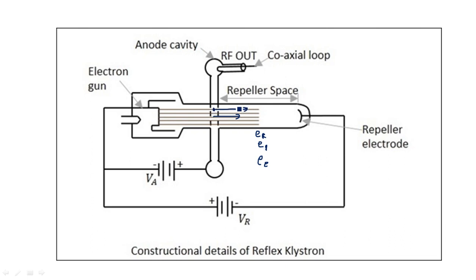I am now going to explain what is the distance traveled by the reference electron from here to here. We take the distance as x. This distance is determined by the repeller voltage. The electrons are generated by the application of Va. The accelerating anode voltage is the only voltage responsible for the generation and travel of the reference electron, which is why we take the reference electron into consideration. The accelerating voltage can be represented as V-naught or Va — both are the same.